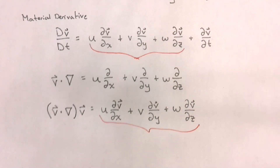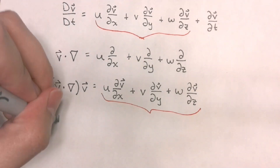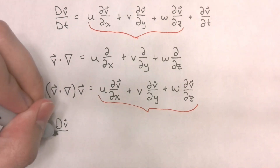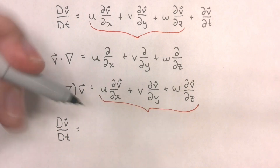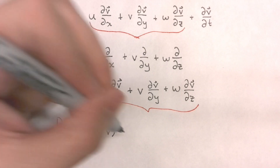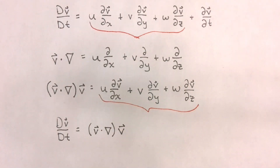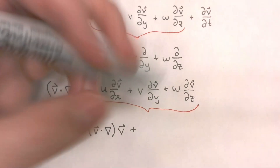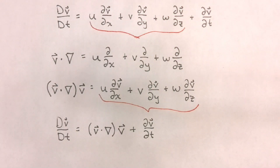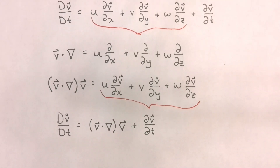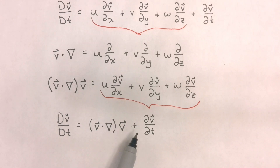That means we can express the material derivative of v with respect to time as equal to the convective change — v dot nabla applied to v — plus the local change, which is the partial of velocity with respect to time. This is another way we will see the material derivative in the following lessons. Some books flip these two terms, placing the local change first followed by the convective change, but that means the same thing.